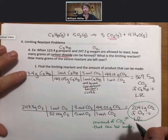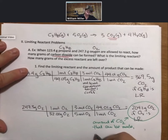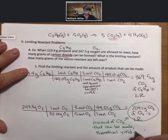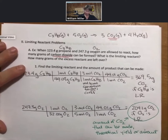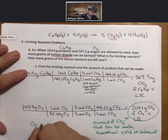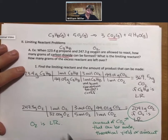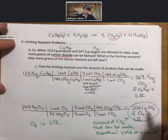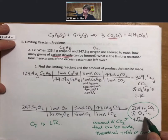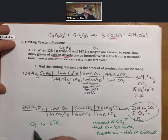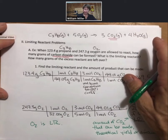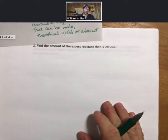It's also called the theoretical amount or the theoretical yield, and O2 is the limiting reactant. Okay, come back to my question. How many grams of carbon dioxide can be formed? 204.1. What is the limiting reactant? O2 is the limiting reactant. How many grams of the excess reactant are left over? For that, we'll go to the next slide. Actually, before we do that...